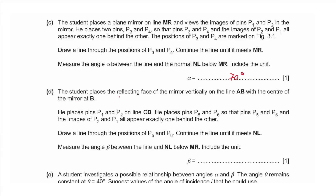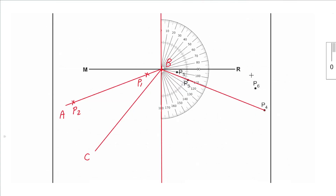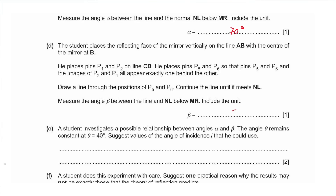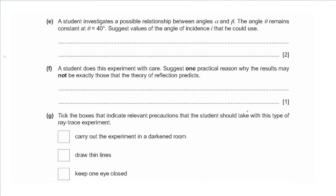Part d: the student places the mirror on line AB with its center at B, then places pins P1 and P2 on line CB. Pins 5 and 6 are placed so all four appear in line. Drawing a line through pins 5 and 6 toward the normal and measuring angle beta gives 80° — which is 10° more than the 70° from part c.